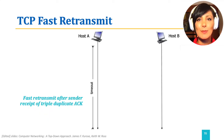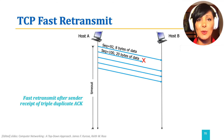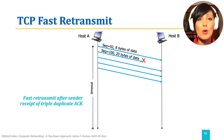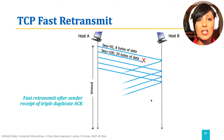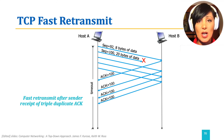Let's explore this with an example. Assume the sender, host A, sends the first segment with sequence number 92 and 8 bytes, and the second segment with sequence number 100 and 20 bytes, and three more following segments with higher sequence numbers after. If the segment with sequence number 100 is lost, host B will keep sending acknowledgements with sequence number 100.